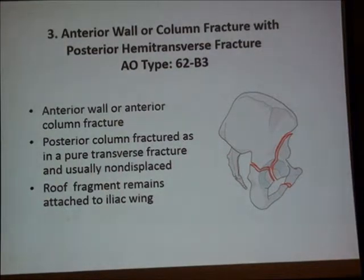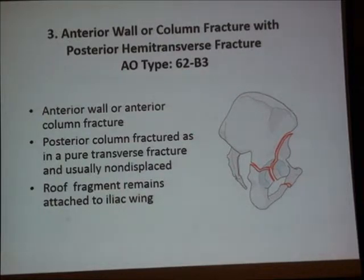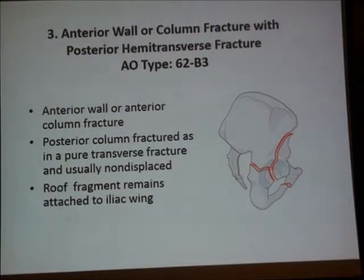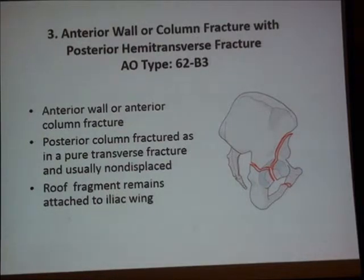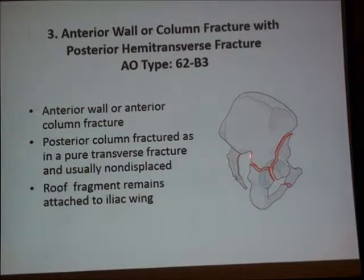Coming to the anterior wall or column with posterior hemitransverse fracture — we may miss this injury; it is sometimes difficult to diagnose and may be mistaken for a T-fracture or posterior column fracture. The T-shaped fracture has only a transverse element and a vertical element. Here we have an anterior injury plus a transverse component. In both-column fractures, the articular surface is floating and no longer attached to the ilium, but here a portion of the articular roof remains attached to the ilium, which differentiates this type from both-column fractures.